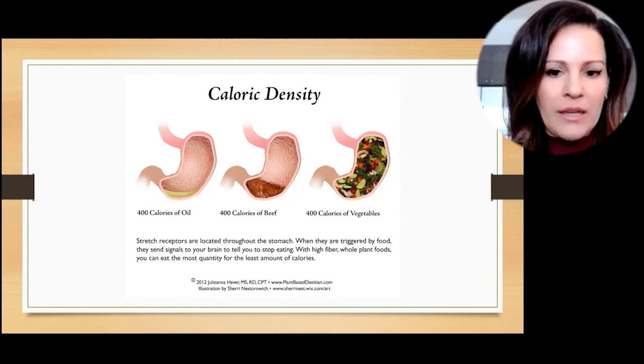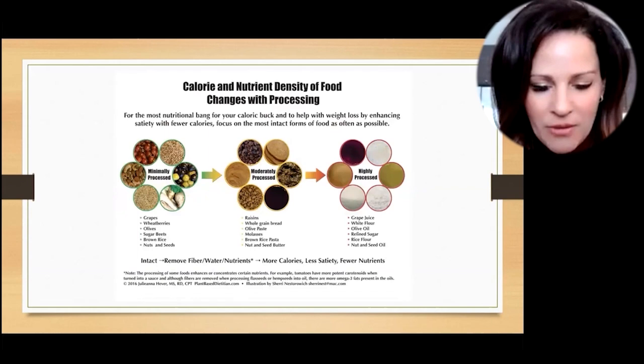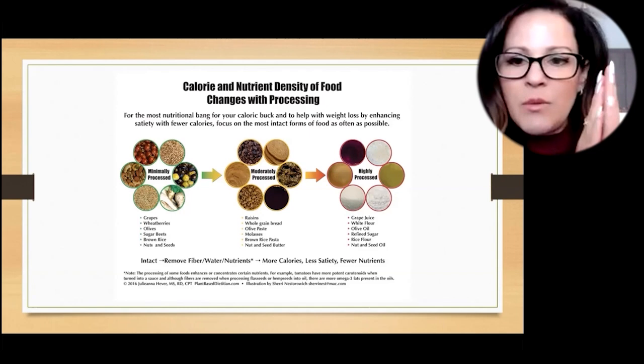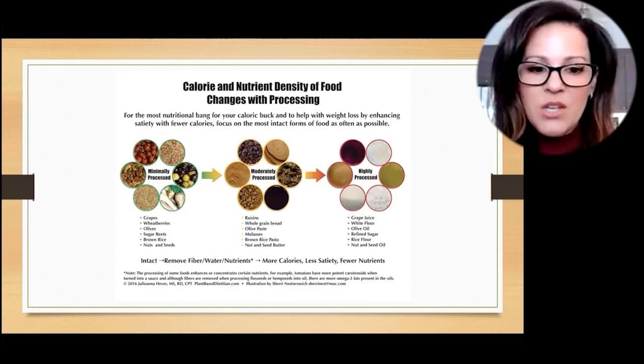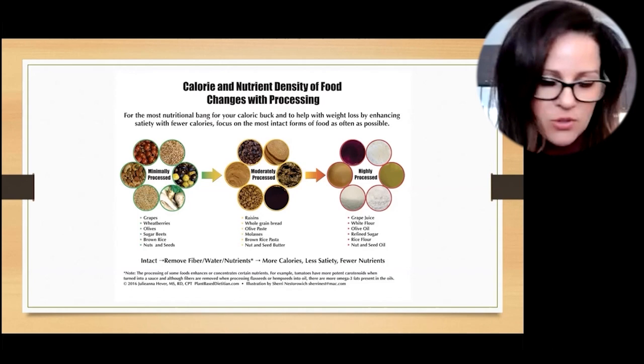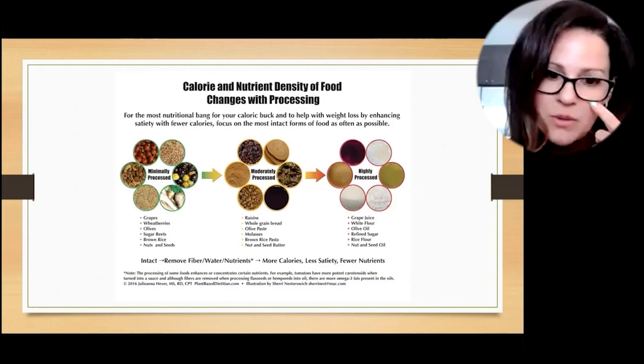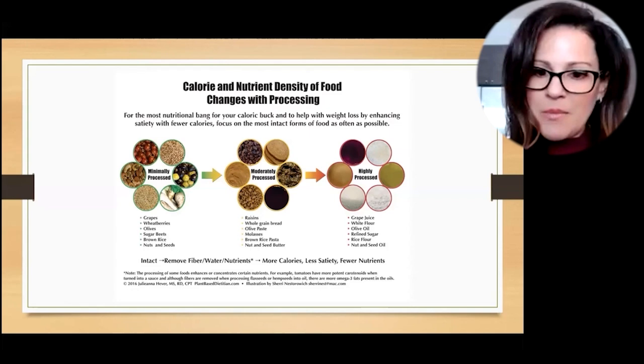So you could utilize caloric density to your advantage to stay satiated. Eating whole plants is ideal. And so I kind of broke this down into another graphic a few years ago. The calorie and nutrient density of food changes with the processing. So every derivation away from the original, we're getting rid of fiber, we're getting rid of some of the nutrition, and so we're going to get less satiety.